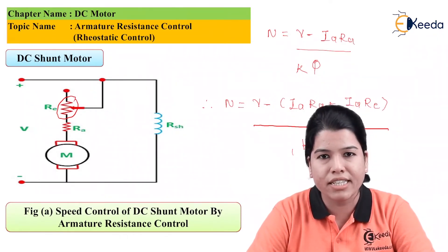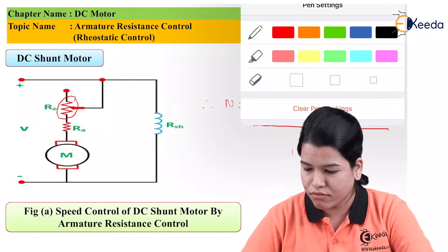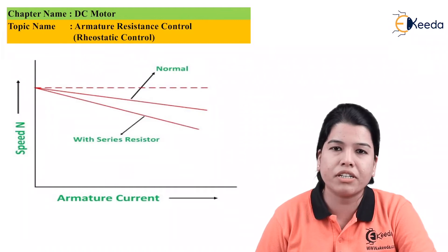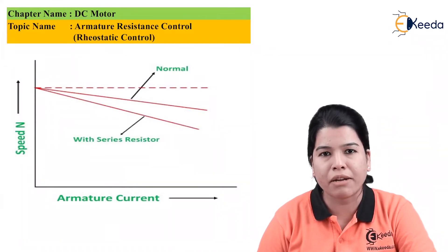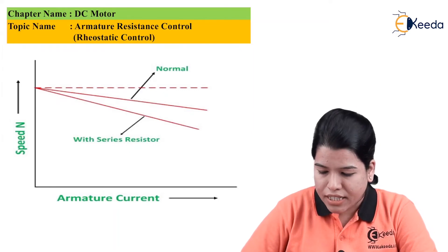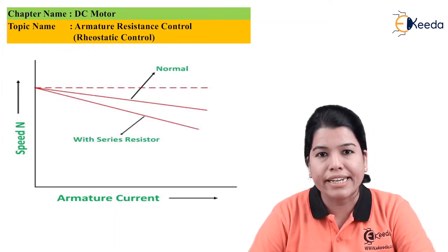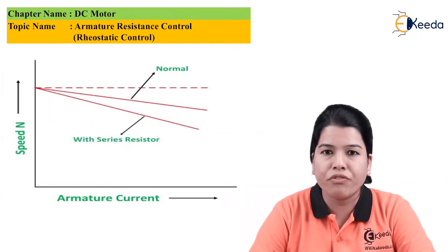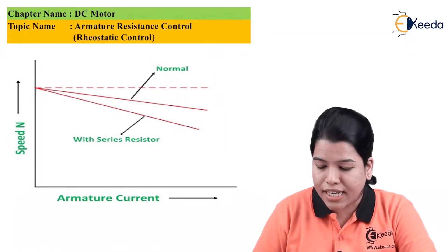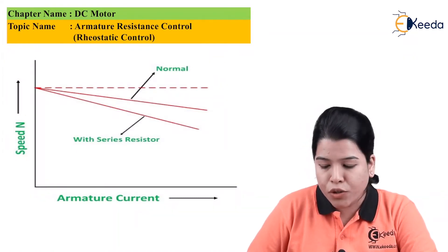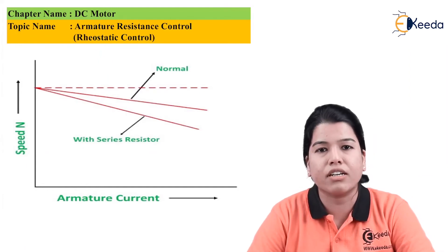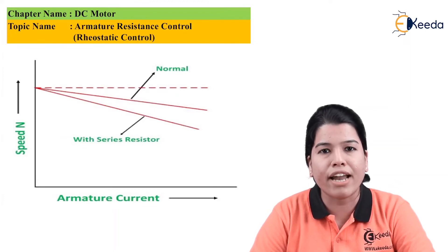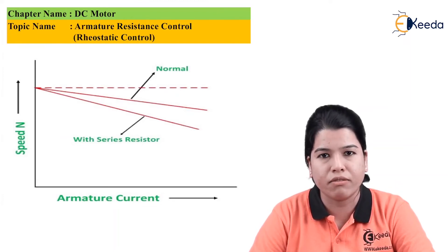Now let us see the characteristics for the DC shunt motor. The figure shows the speed versus armature current characteristic for DC shunt motor under armature resistance control. One line shows normal operation without the series resistor, and the other line shows operation with the series resistor. With the series resistor, the speed decreases as armature current increases. Hence in this method we can control the speed of the DC shunt motor at values lower than its rated speed.